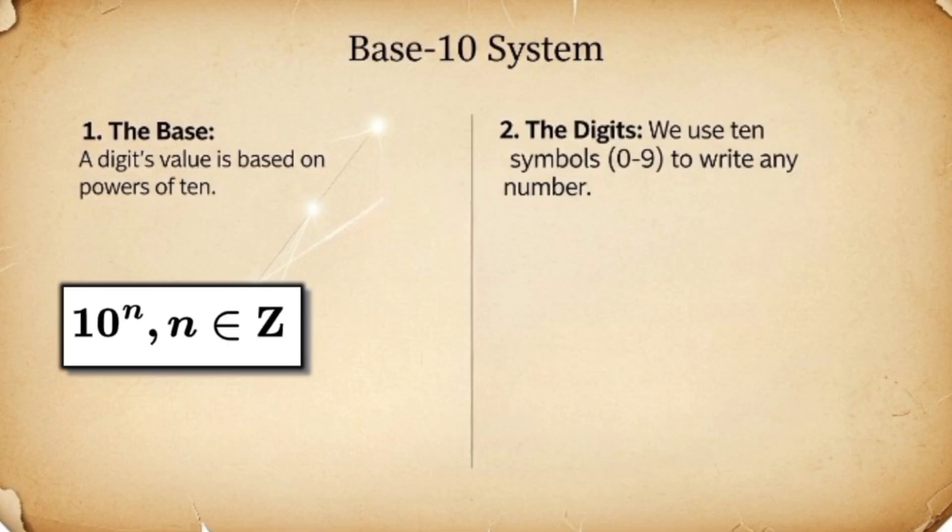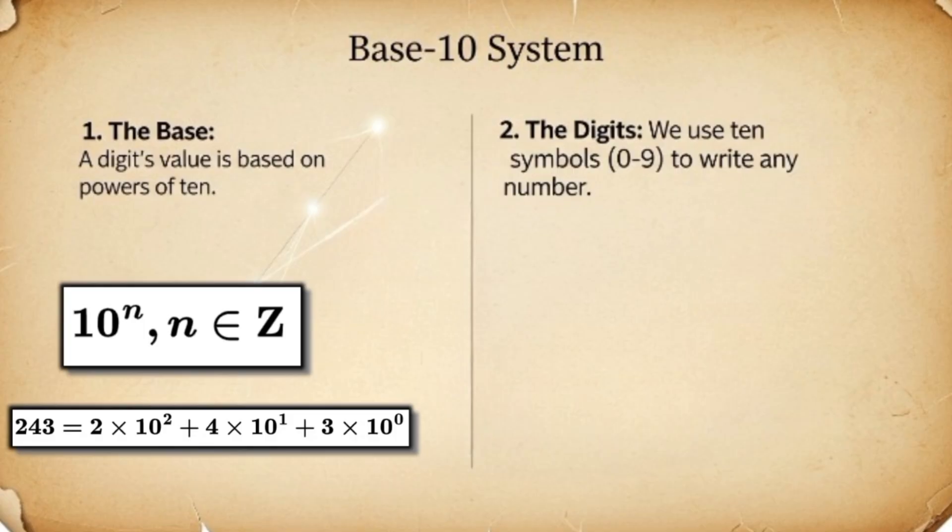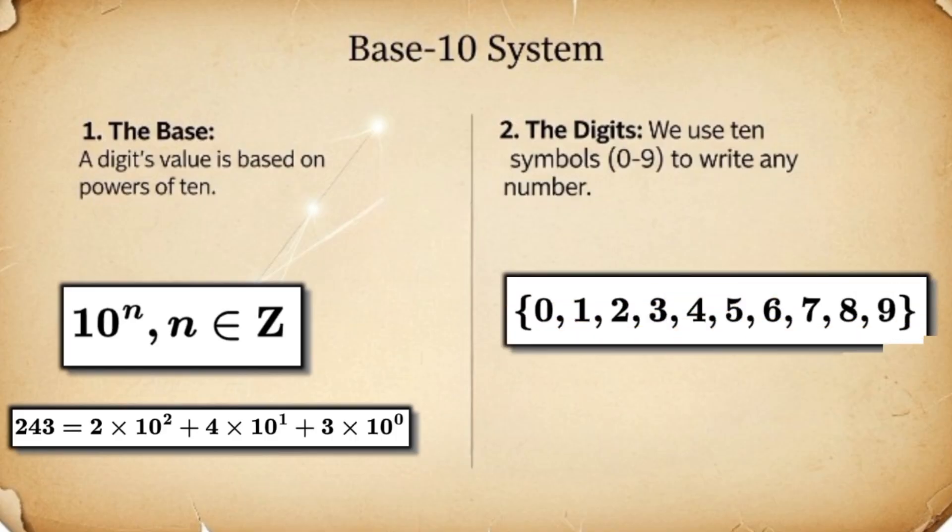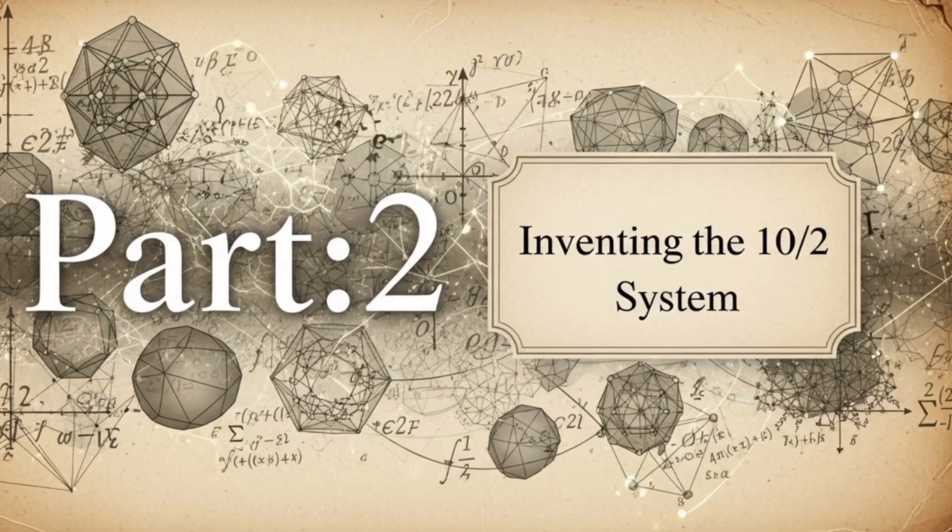So the number 243 is really a shorthand for two hundreds, four tens, and three ones. Rule 2: The digits. To write any number, we have 10 symbols: 0, 1, 2, 3, 4, 5, 6, 7, 8, and 9. This system is so natural to us that we forget it's just a framework, a set of rules. And today we are going to change one of those rules.